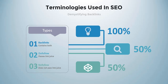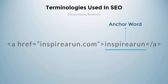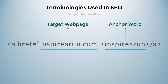Before explaining what a nofollow or dofollow link is, you need to know the technical difference between them. In HTML, a link or backlink is written as: <a href="inspirearoun.com">inspirearoun</a>. Here, the anchor word is 'inspirearoun', which is visible to the normal user. When the user clicks on this anchor word, it will take him to the target webpage mentioned in the href attribute of the a tag. This HTML link is an example of a dofollow link.